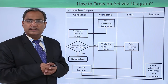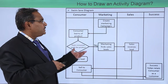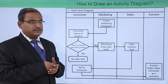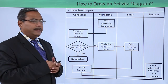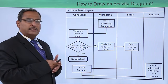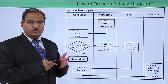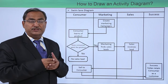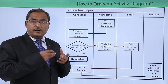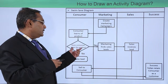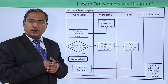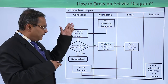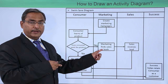Now let us consider this swim lane diagram. Here we have the consumer, marketing, sales, and success lanes. Marketing creates campaigns, so the consumer learns about the product and its different features. Then the question is: does the consumer want to purchase the product? If no, there is no sales lead and the flow gets terminated there.